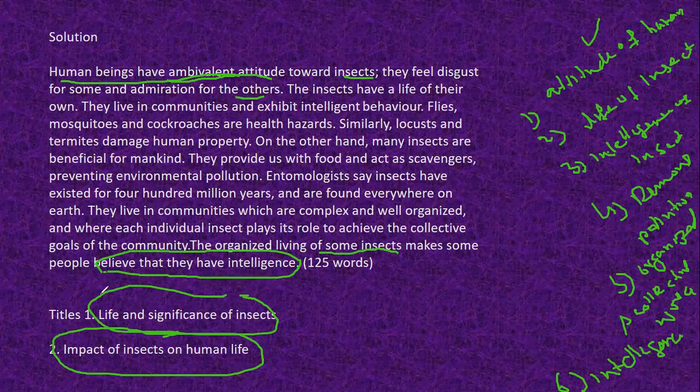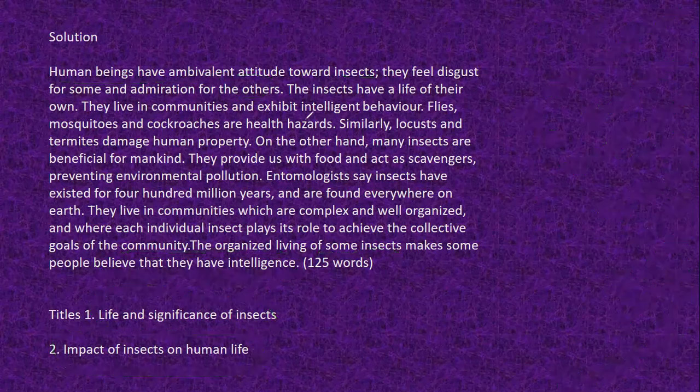On the other hand, many insects are beneficial for humankind — they provide us with food and act as scavengers preventing environmental pollution. Etymologists say insects have existed for 400 million years and are found everywhere on earth. They live in communities that are complex and well-organized, where each individual insect plays its role to achieve the collective goals of the community. This organized living makes some people believe in their intelligence. The title of this précis is 'Life and Significance of Insects' and 'Impact of Insects on Human Life.'